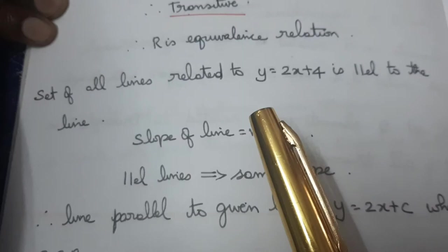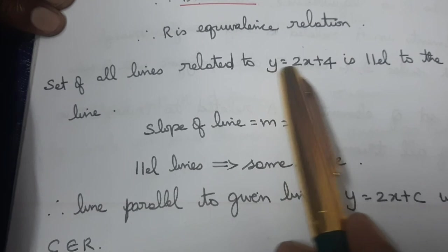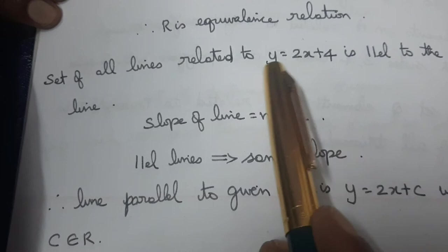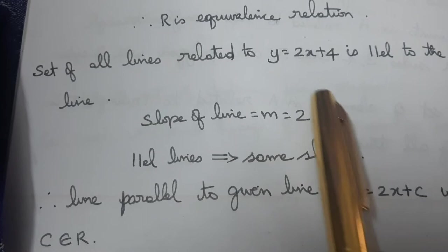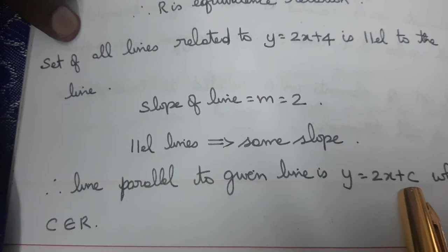For the second part: the set of all lines related to Y equal to 2X plus 4. A line is related if it is parallel — parallel lines have the same slope. The slope is 2, so the general form is Y equal to 2X plus C, where C belongs to real numbers. That is the set of related lines.